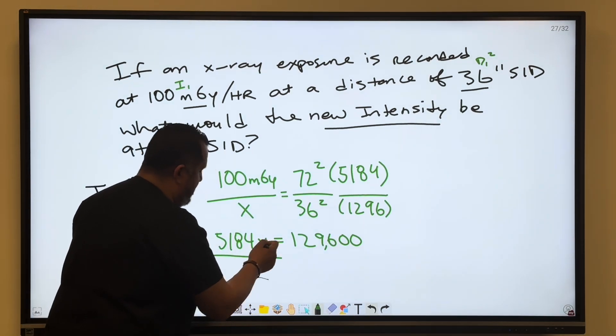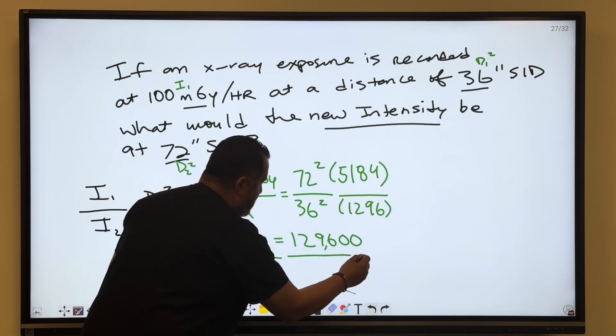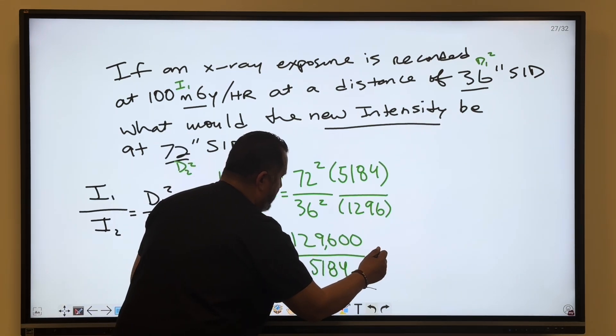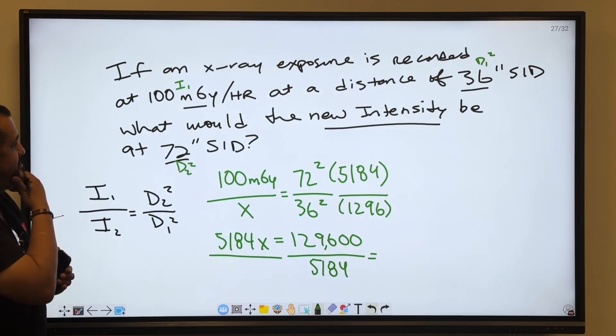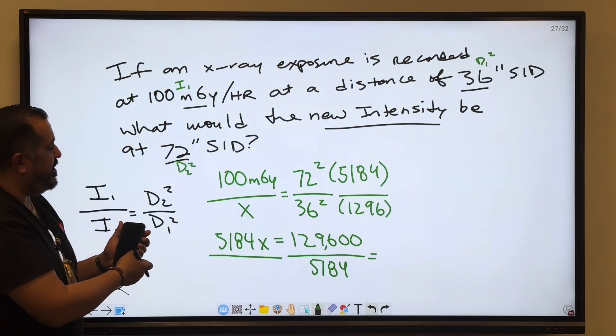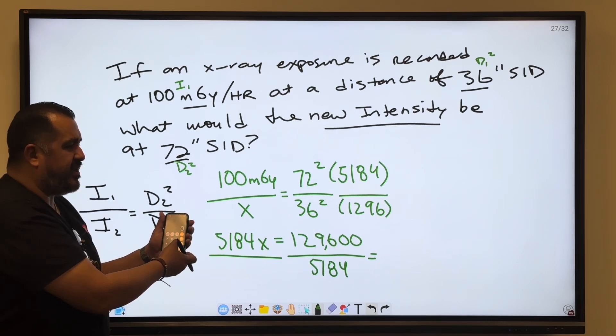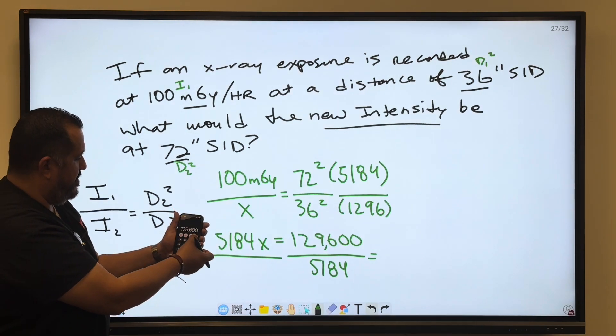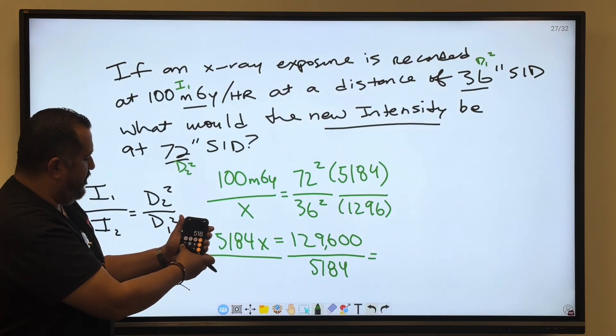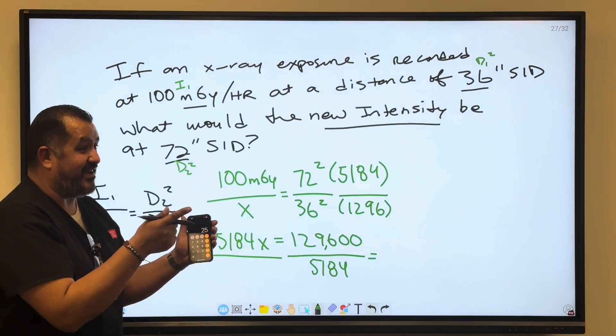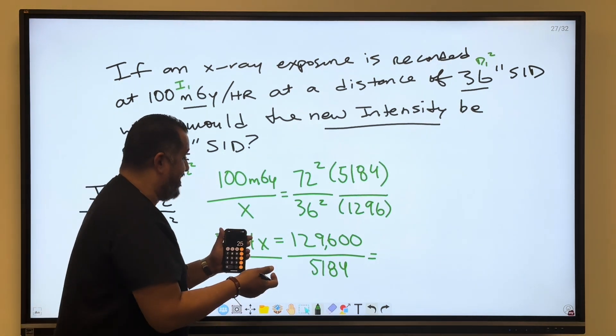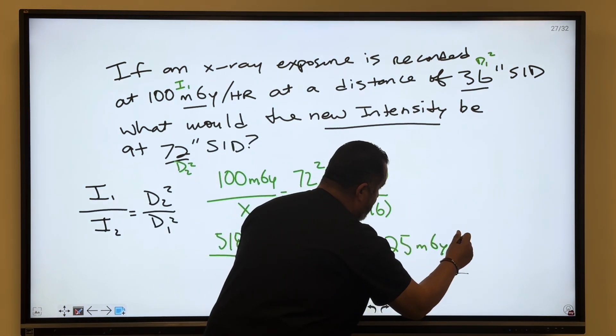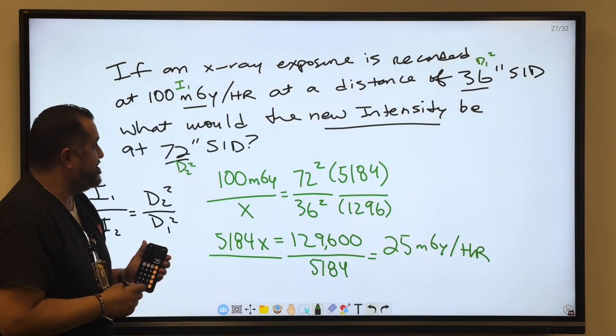Now we have to get rid of this number here, so we're going to do 129,600 divided by 5184. If you divide 129,600 divided by 5184, you should get 25. So it's 25 milligray per hour.